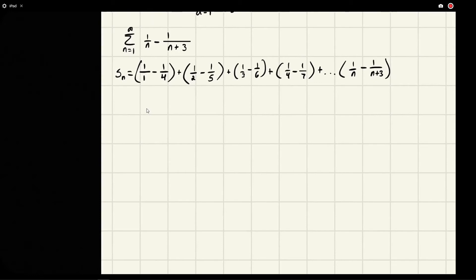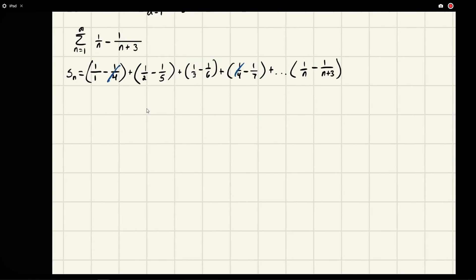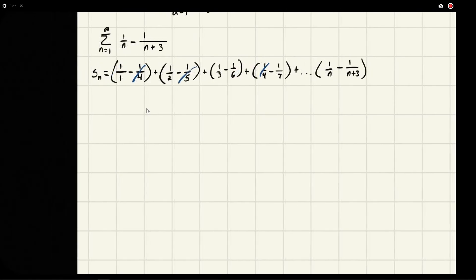And if we were to see what cancels here, we say well the 1 has nothing to cancel with. The 1/4 though, this negative 1/4 can cancel with this positive 1/4. And then this 1/2 has nothing, this negative 1/5 would cancel with the next term.